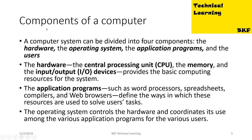Components of a computer. A computer system can be divided into four main components: the hardware, the OS, the application programs, and the users. The hardware — the CPU, the memory, and the IO devices — provides the basic computing resources for the system.